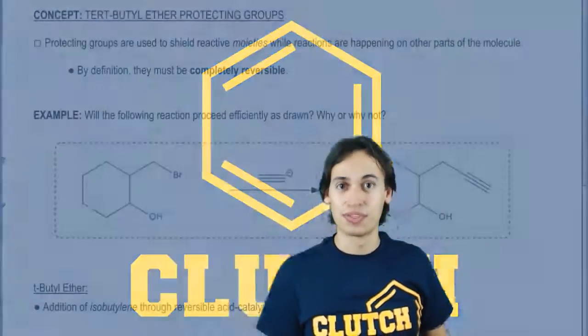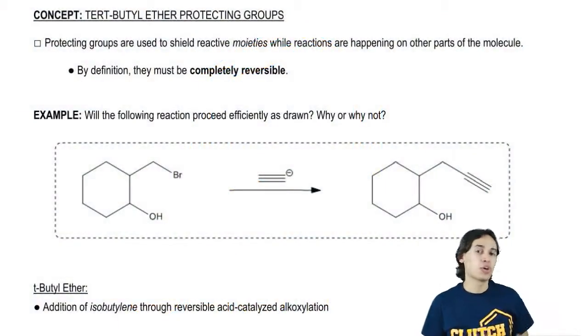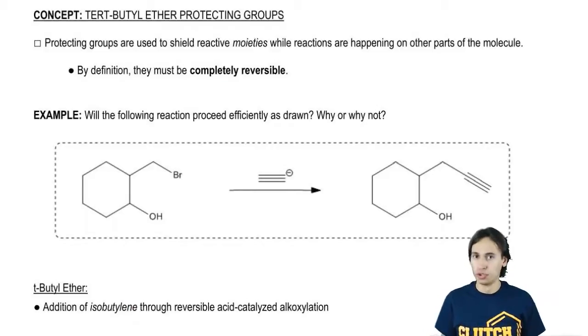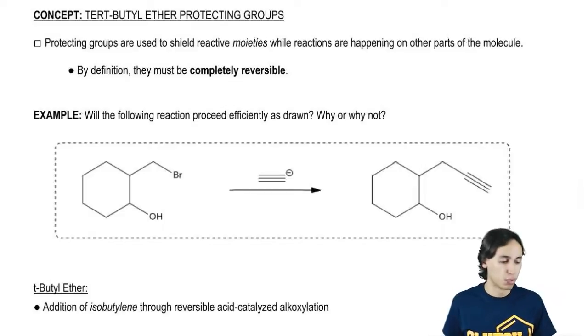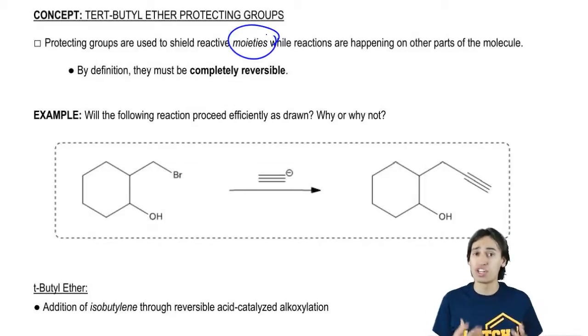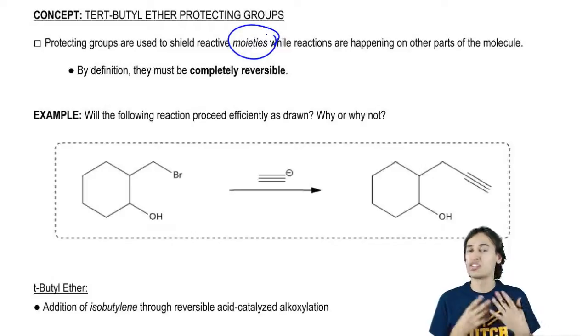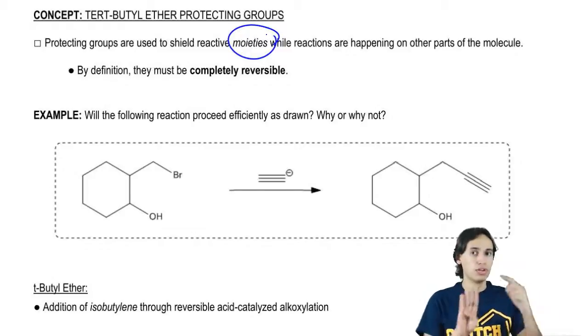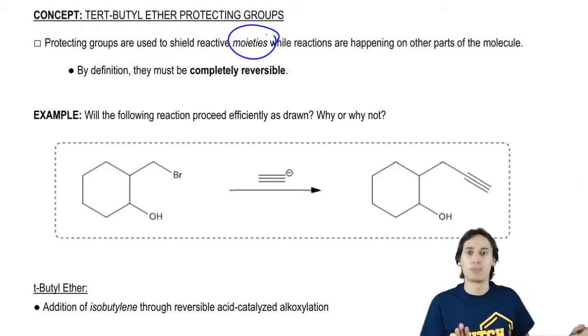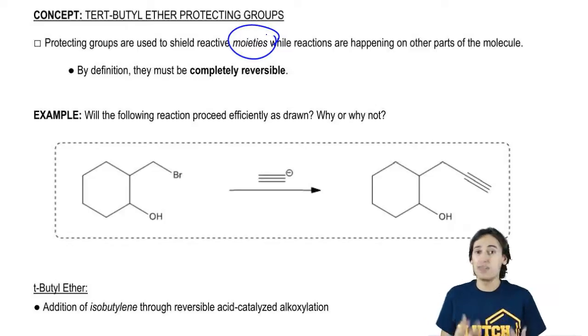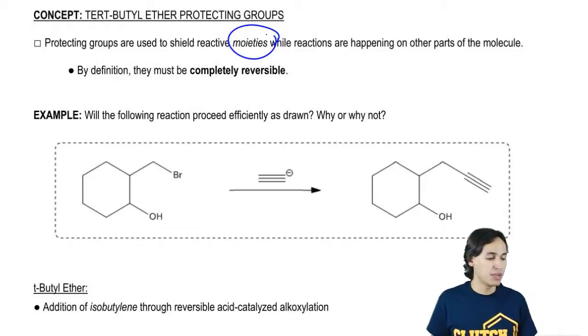Hey guys, now let's talk about protecting groups. Protecting groups are reactions that are used to shield certain types of functional groups. In this case, I'm using the word moieties. Moieties just means some kind of reactive region of the molecule from a reaction that's going to happen on another part of the molecule. By definition, this has to be a completely reversible, easily reversible reaction.